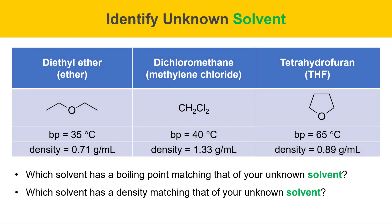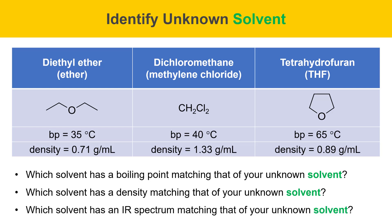Next, you should consider solvent density. You can either determine the density on a balance or determine the density relative to water — does your unknown solvent sink or float in water? If your solvent sinks, it would be dichloromethane, since that solvent has a density greater than 1. If it floats, it would be either diethyl ether or tetrahydrofuran. Note that THF is somewhat water soluble and its density is close to water, so a small amount may dissolve, or a larger amount may form a top layer or emulsion when shaken. Finally, compare your unknown solvent's IR spectrum to the reference spectra — each solvent has a unique IR spectrum.